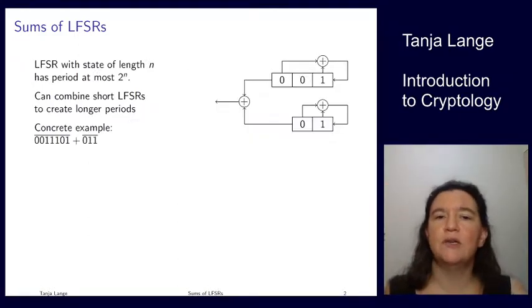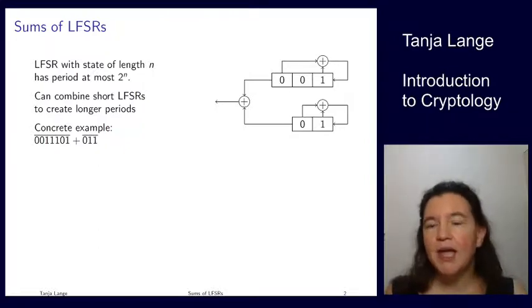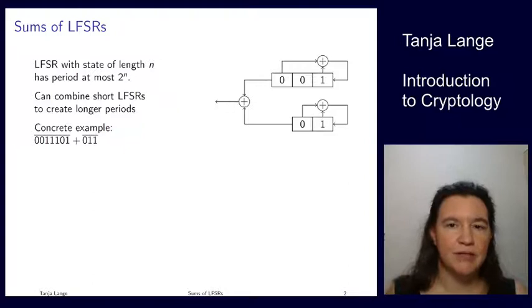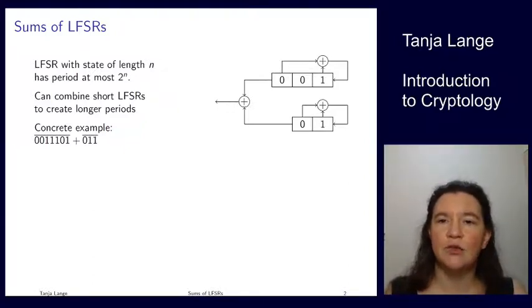So let's do a concrete example. Here are two LFSRs which we've been looking at in the last lecture already. These correspond to the polynomials x squared plus x plus 1 which had period 3, and the other one corresponds to x plus x squared plus x cubed. This one has the same period 7, just a little bit of a different output.